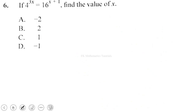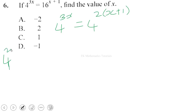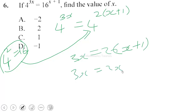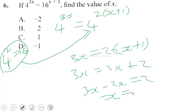Question 6: solve 4^(3x) = 16^(x+1). We rewrite this as 4^(3x) = 4^(2(x+1)), since 16 = 4². Because the bases are the same, we equate the exponents: 3x = 2(x + 1), which gives 3x = 2x + 2, so 3x − 2x = 2, and x = 2. The correct answer is B.